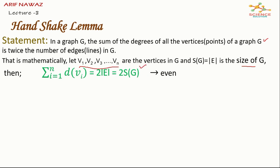That will be an even number. It implies that every line of g is incident with two points so every line contributes two degrees.